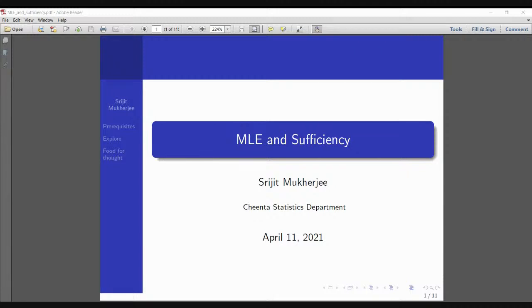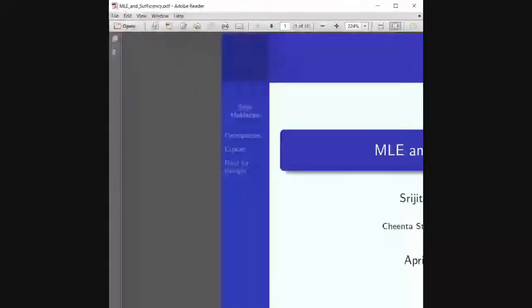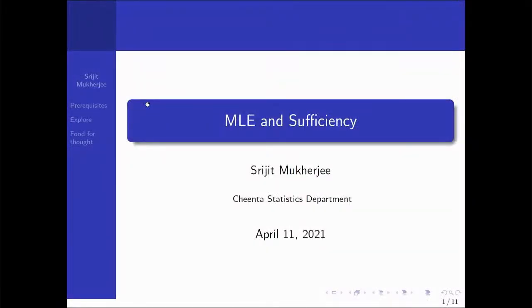One of those good properties is sufficiency. There are two categories: small sample properties and large sample properties. With small sample properties, we don't assume the sample is large. These properties include sufficiency, completeness, unbiasedness, minimum MSE, UMVUE, and attaining the Cramér–Rao lower bound.